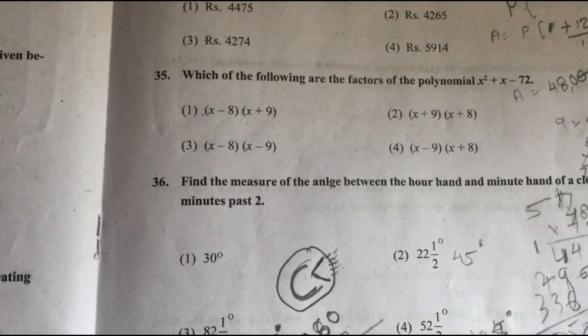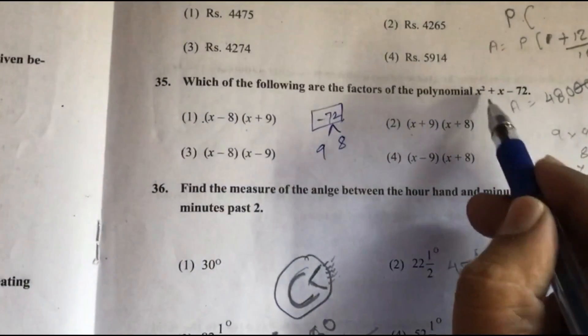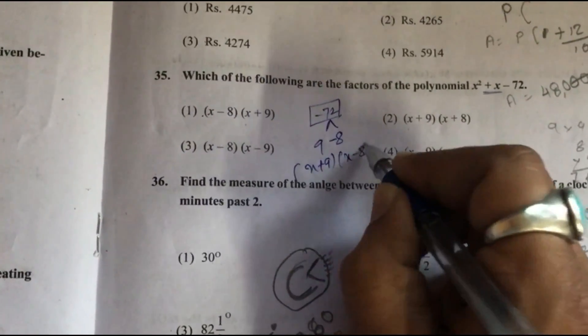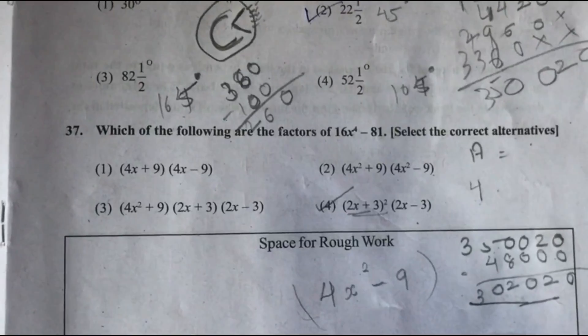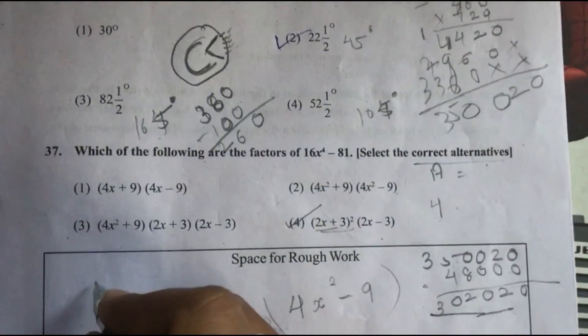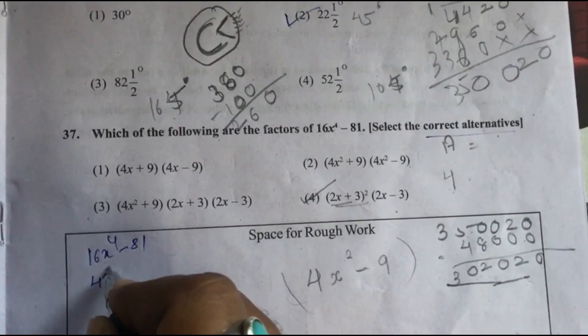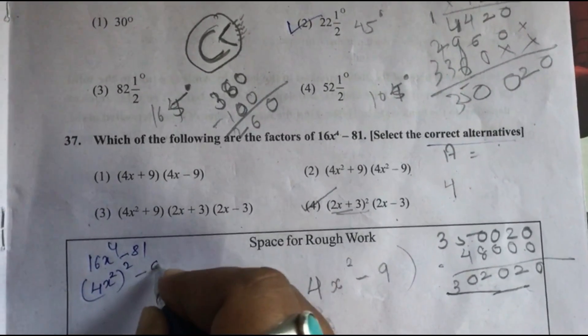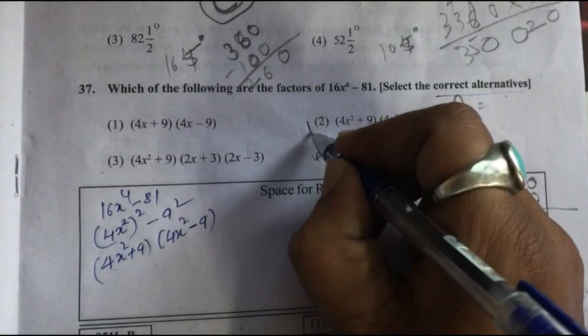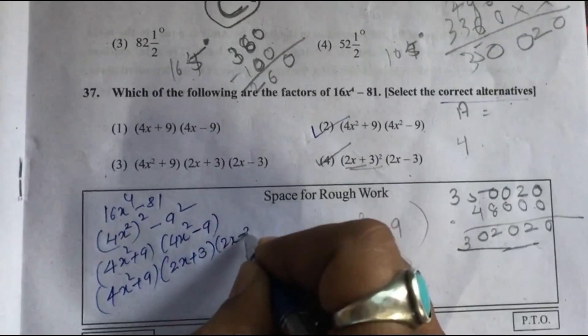Question 35: Which of the following are the factors of 16x raise to 4 minus 81? Select the correct alternatives. 16x raise to 4 minus 81 is written as 4x square whole square minus 9 square. That is 4x square plus 9 times 4x square minus 9, option 2. Now again this we can solve as 2x plus 3 times 2x minus 3, so option 3.